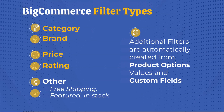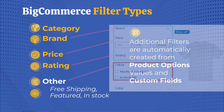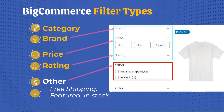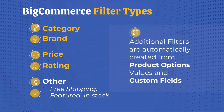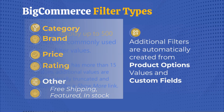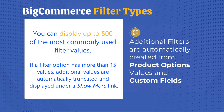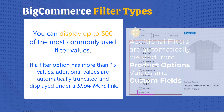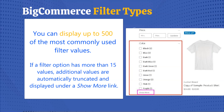BigCommerce has pre-built filter types of category, brand, price, and rating, and can generate other filters based on the attributes and variant options you add to products in your catalog. You can display up to 500 of the most commonly used filter values, and if a filter has more than 15 values, additional values are automatically truncated and displayed under a 'Show More' link.